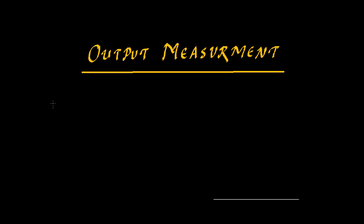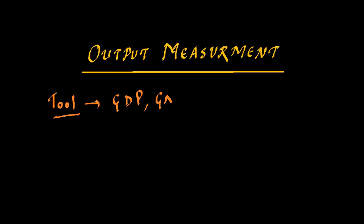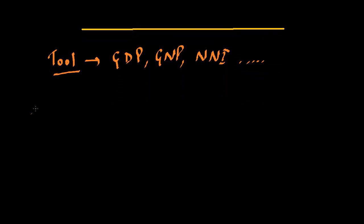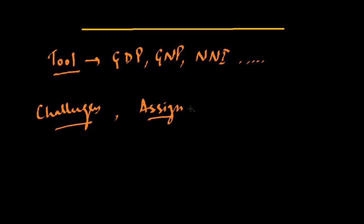From the previous video we saw that there are tools to count the output, like GDP, GNP, NNI and things like that. Now let's see what are the major challenges while counting the output and how to assign the values to it. Let's see them further.